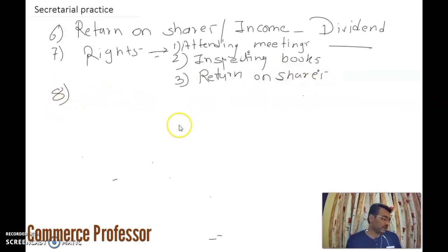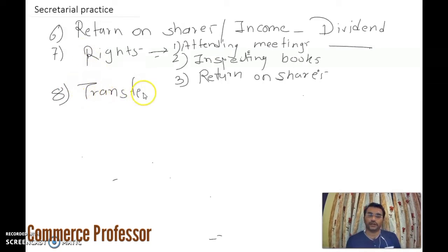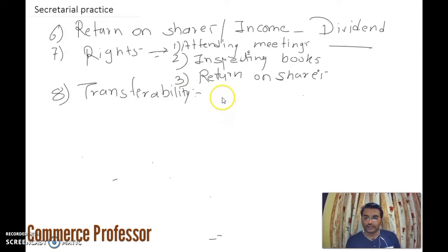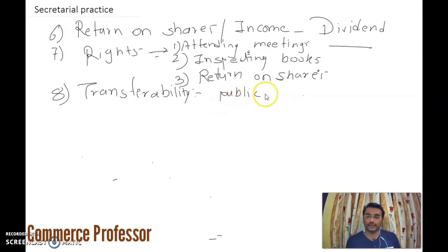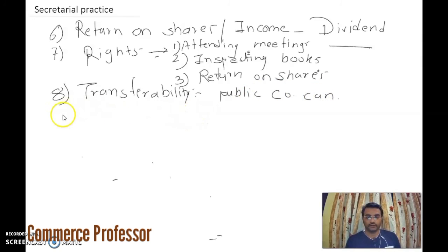The eighth feature is transferability. As we had understood with public companies, public company shareholders can transfer their shares freely to any person. For private companies, there are different conditions. Shareholders also have the right to elect or remove the board of directors.